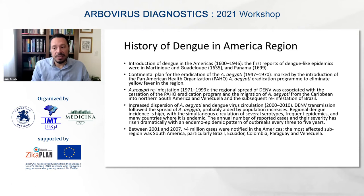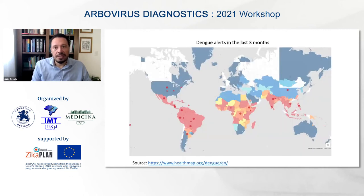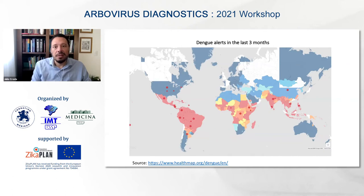The most affected sub-region was South America, particularly Brazil, Ecuador, Colombia, Paraguay, and Venezuela. Looking at the most recent three months of dengue data, South America continues to have a huge burden of disease, with several cases continuing to be reported in these areas.